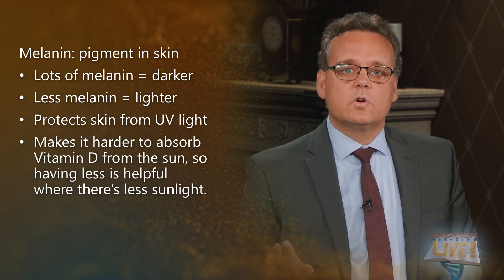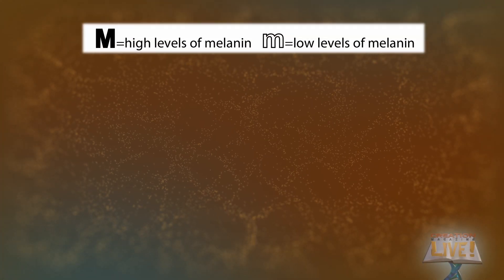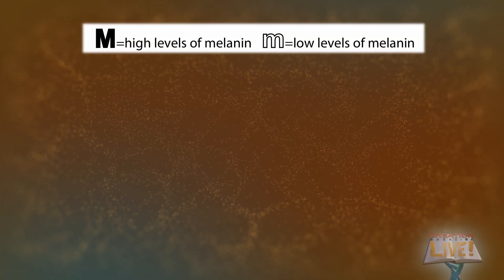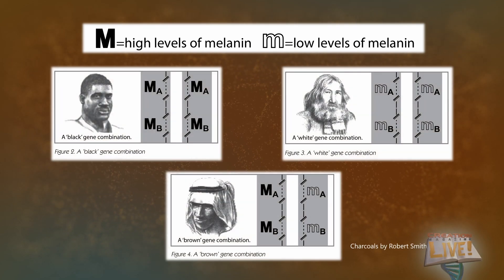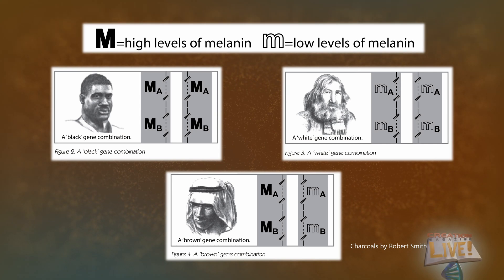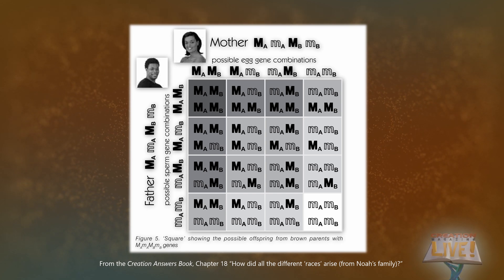Melanin also makes it harder to absorb vitamin D from the sun, so having less is helpful where there's less sunlight. Skin colour is governed by more than one pair of genes, but let's suppose there's only two. One form of the gene, capital M, says make lots of melanin. Another form, small m, says make a little bit. Already, possibilities range from very light to very dark, depending on what's inherited in your DNA. Consider parents who each have four possible combinations available to pass on. This graph shows 16 possible skin tones in just one generation, which easily explains those twins.